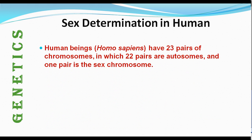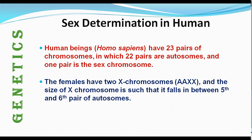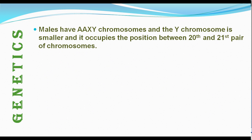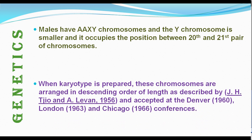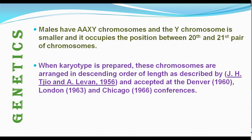Human beings, the Homo sapiens, have 23 pairs of chromosomes, in which 22 pairs are autosomes and one pair is the sex chromosome. Females have two X chromosomes, and the X chromosome is larger in size, falling between the 5th and 6th pair of chromosomes — a bigger chromosome containing more than a thousand genes. Males have AAXY chromosomes, and the Y chromosome is smaller, occupying a position between the 20th and 21st pair of chromosomes. It also bears a number of genes and is not without genes, contrary to the Y chromosome of Drosophila.